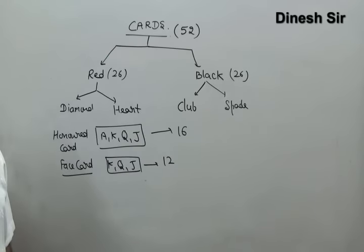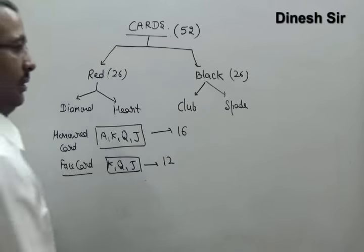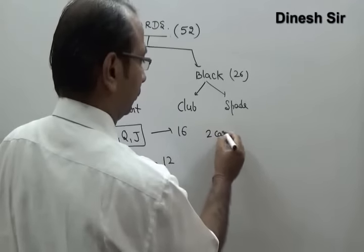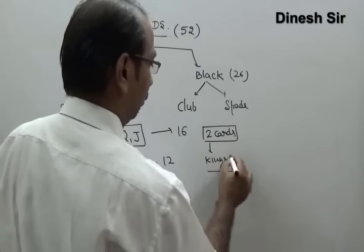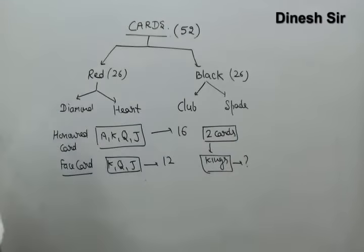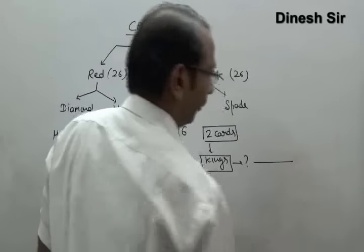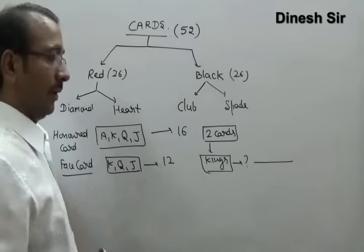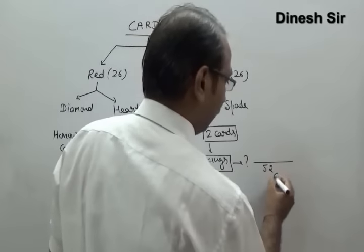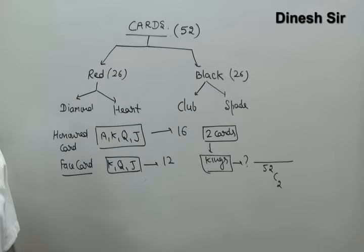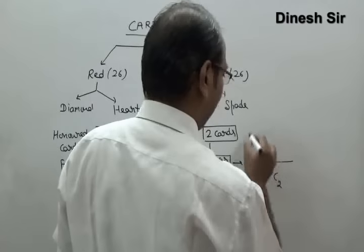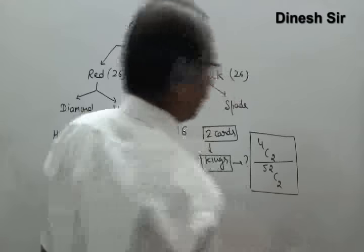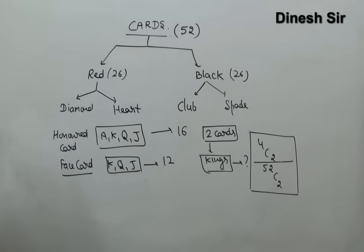Example: two cards are drawn. What is the probability that both cards are kings? Total cases = 52C2. There are 4 kings, so favorable cases = 4C2. Probability = 4C2 / 52C2. That is the answer using the standard probability formula of favorable cases divided by total cases.